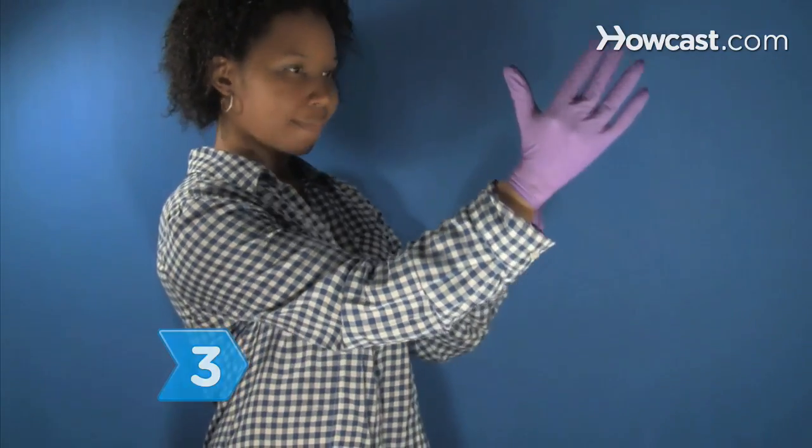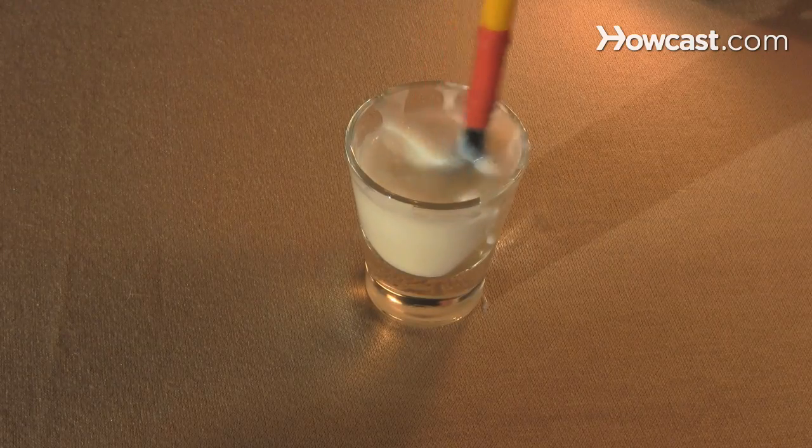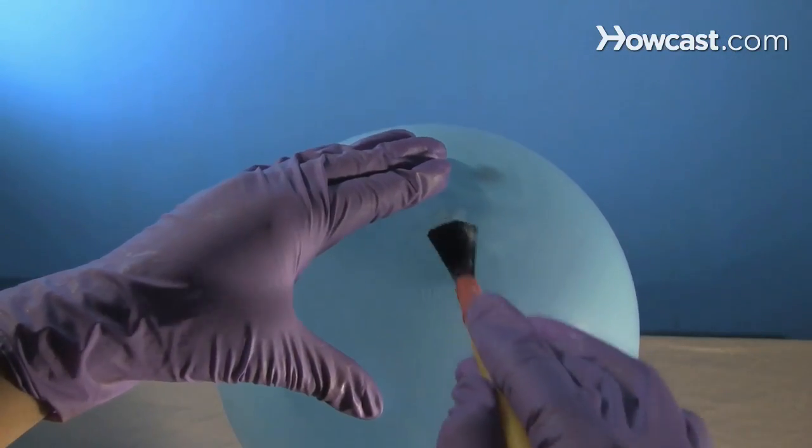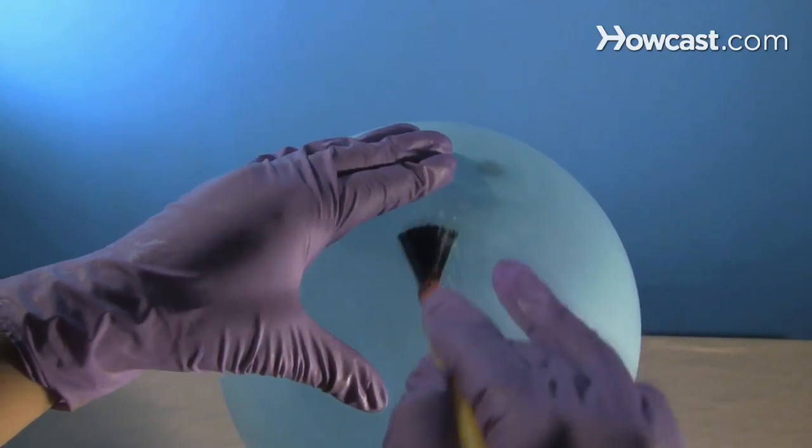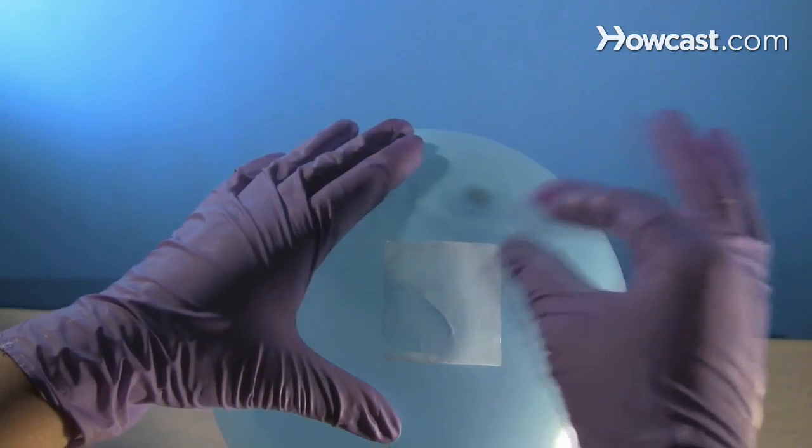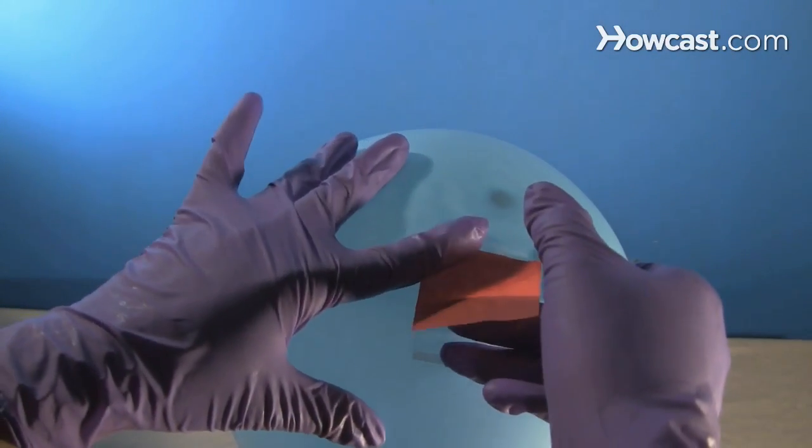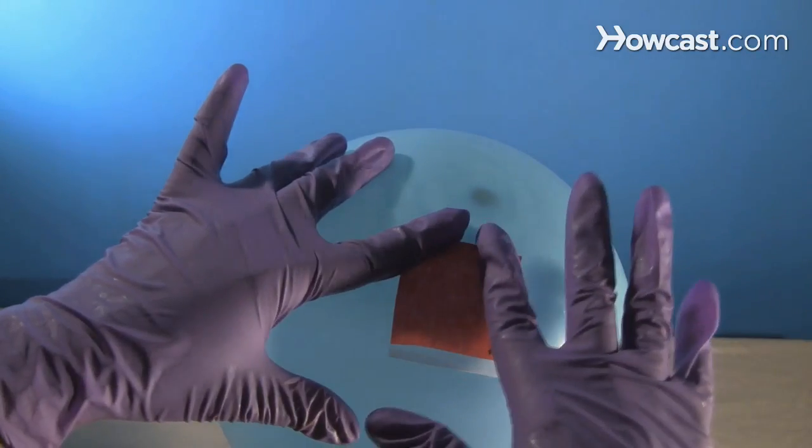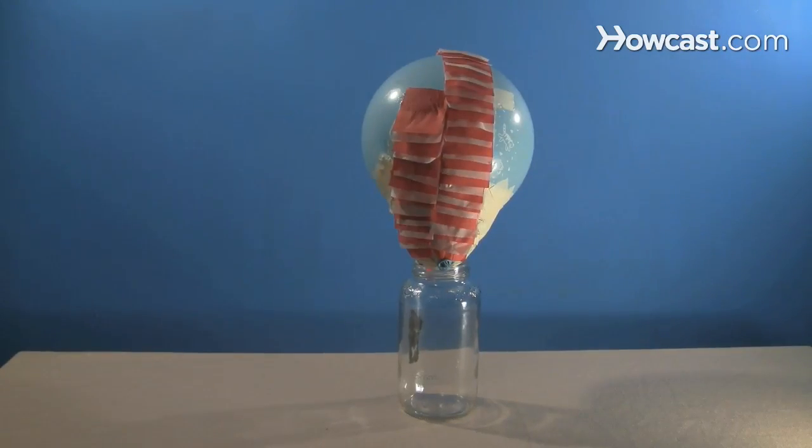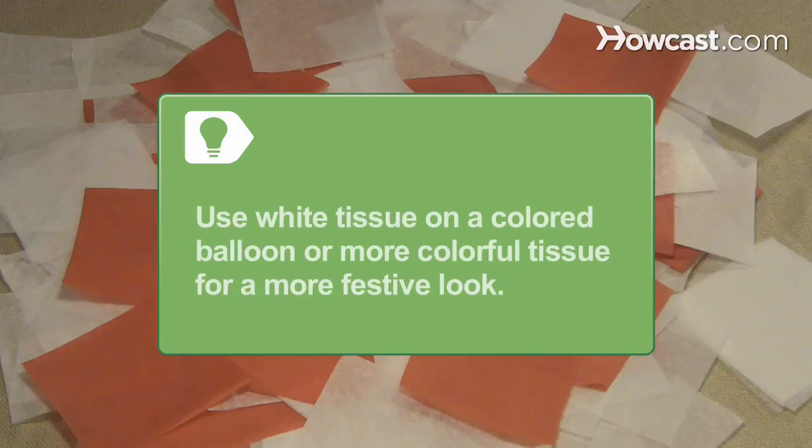Step 3. Put on the protective gloves. Dab the wheat paste or diluted glue on a section of the balloon with the paintbrush. Apply a piece of tissue paper and brush on more paste over the piece. Add another piece so it slightly overlaps the first. Continue around the balloon until you have two layers of tissue covering the balloon. Use white tissue on a colored balloon or more colorful tissue for a more festive look.